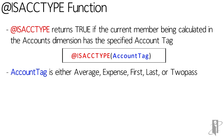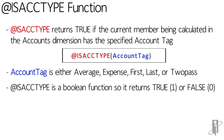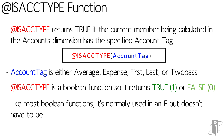In most cases you're probably just checking for expense, although in that case you'd probably use the atvar function. But let's cover how to use this function anyway just for fun. isAccountType is a boolean function so it returns true, which is a 1, or false, which is a 0, and it's normally used inside of an if function.